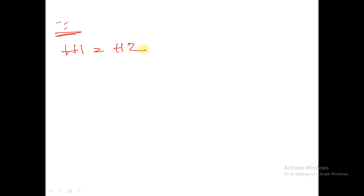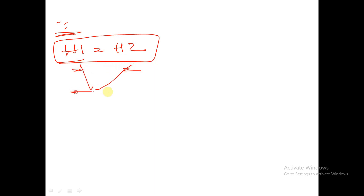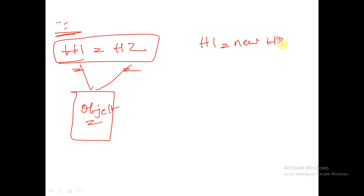In a study session we discussed the difference between normal copy and shallow copy. The syntax for normal copy is handle1 = handle2. In this normal copy, the two handles will be pointing to the same object. Whereas in shallow copy, the syntax is h1 = new h2, so two different objects will be created for these two handles.